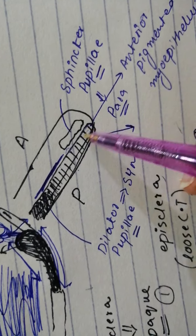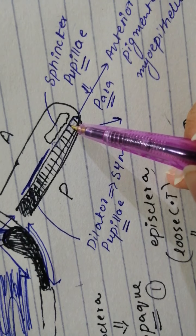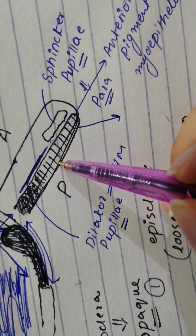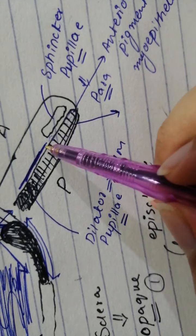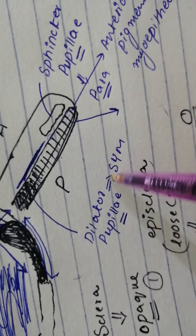So as I've said, both of the layers are pigmented and this is the anterior pigmented myoepithelium and this is the posterior pigmented epithelium. And the processes of the anterior pigmented myoepithelium, they are together collectively referred to as the dilator pupillae.